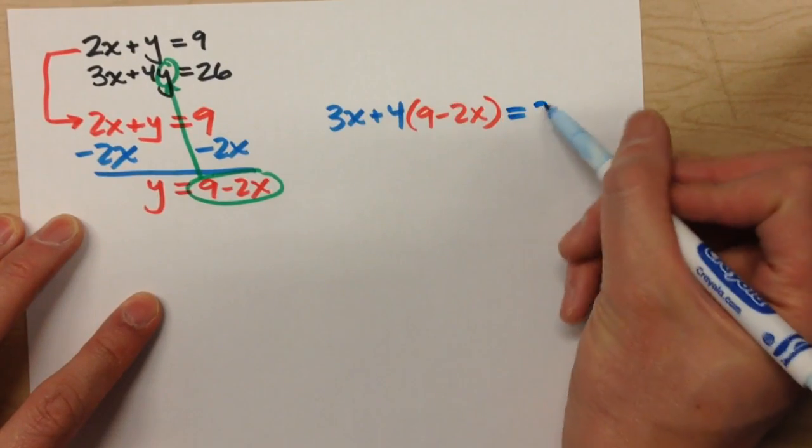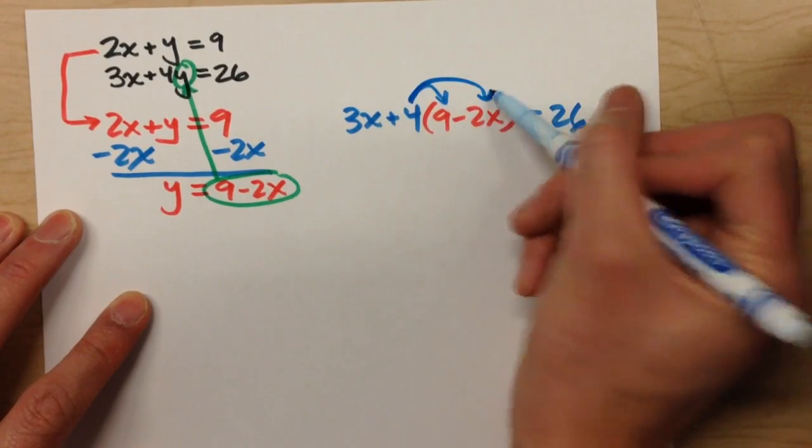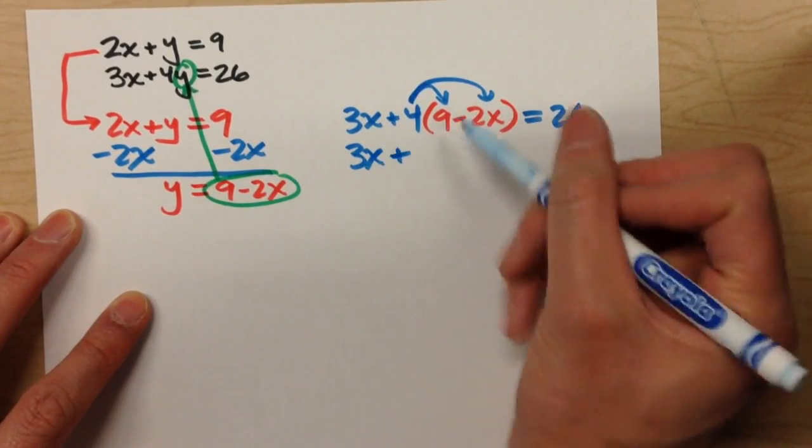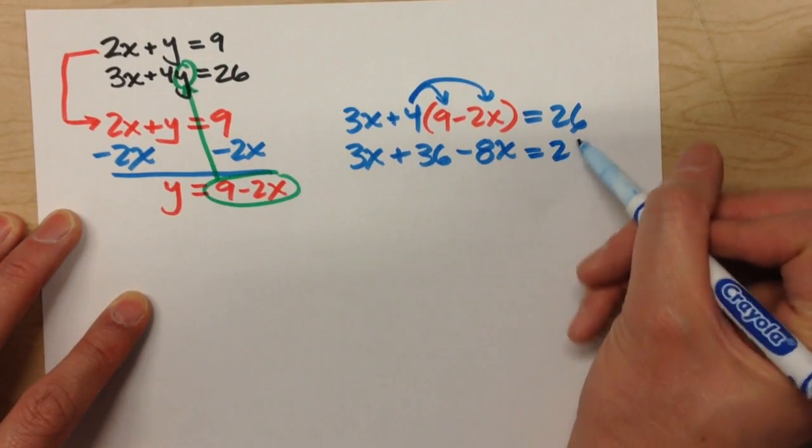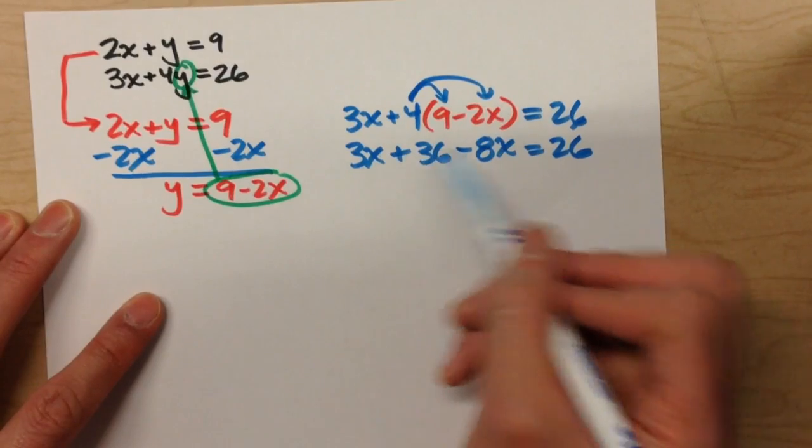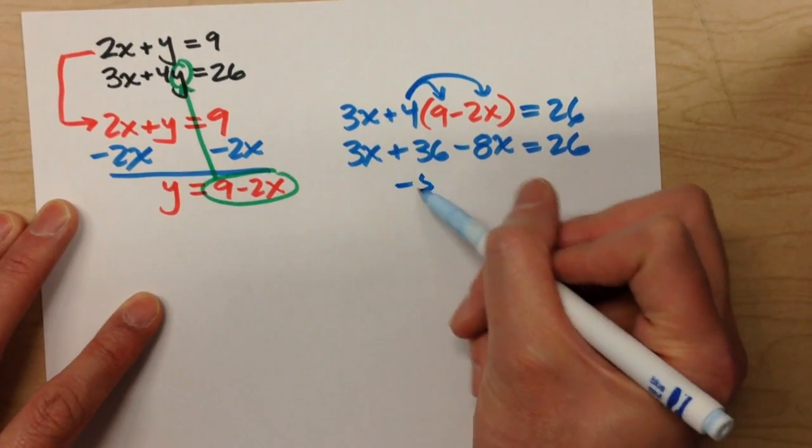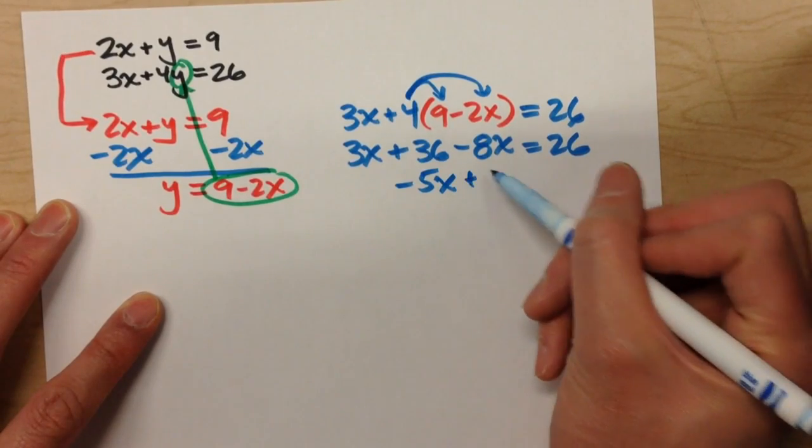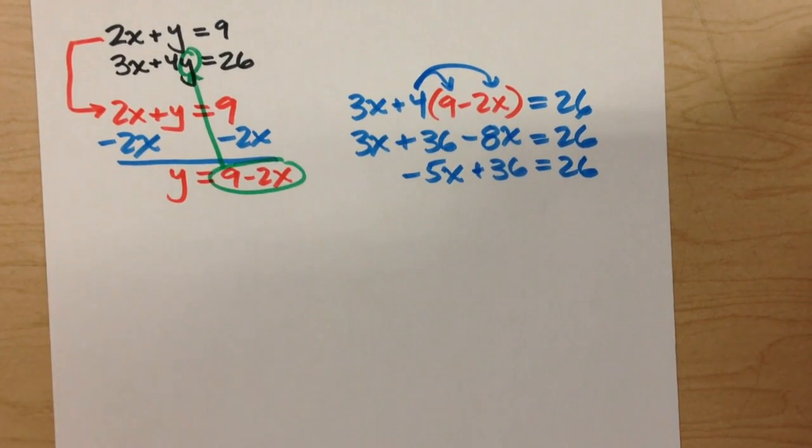And that's going to equal 26. So 3x drops down, distribute the 4, 36 minus 8x equals 26. Combine my like terms, 3x minus 8x is negative 5x, the plus 36 is still there, equals 26. Now I can solve this.